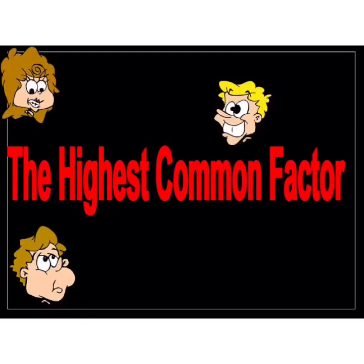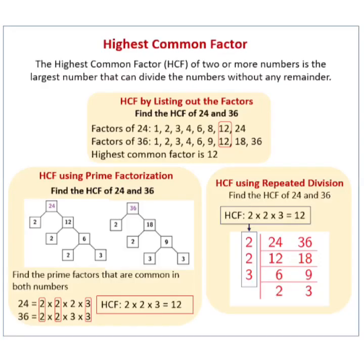We have already learned about common factors, and today we will learn about the Highest Common Factor. The HCF of two or more numbers is the largest number that can divide those numbers without any remainder. For example, the common factors of 24 and 36 are 1, 2, 3, 4, 6, and 12. The highest among these common factors is 12, so the HCF of 24 and 36 is 12.